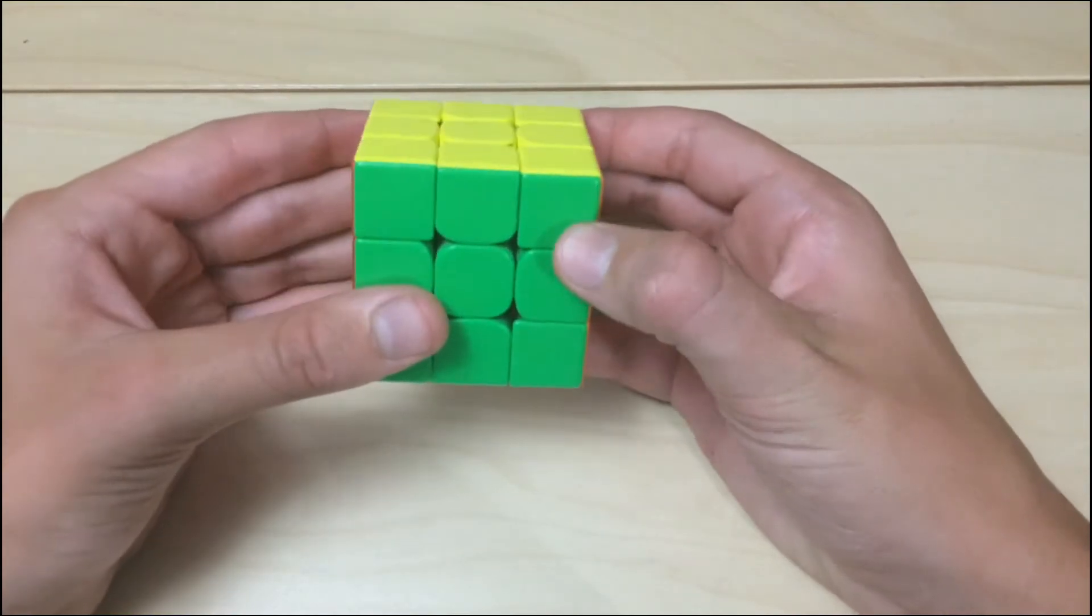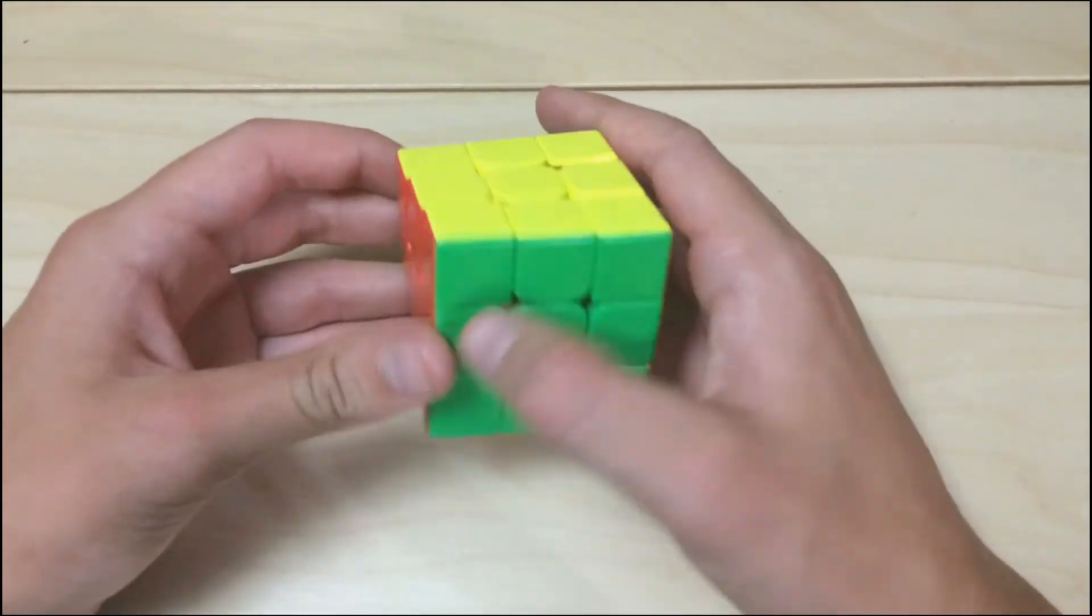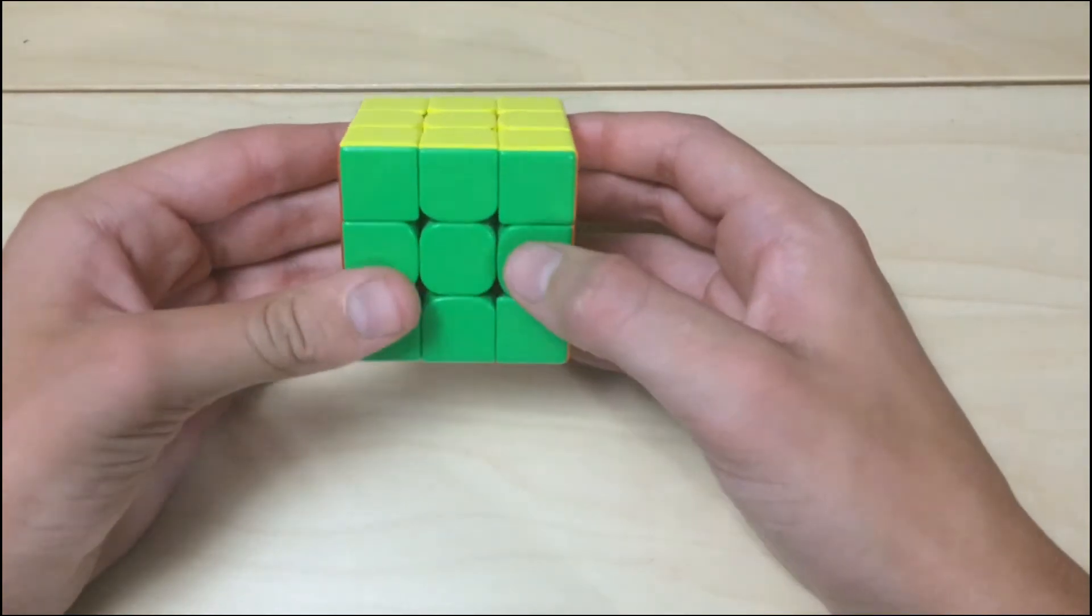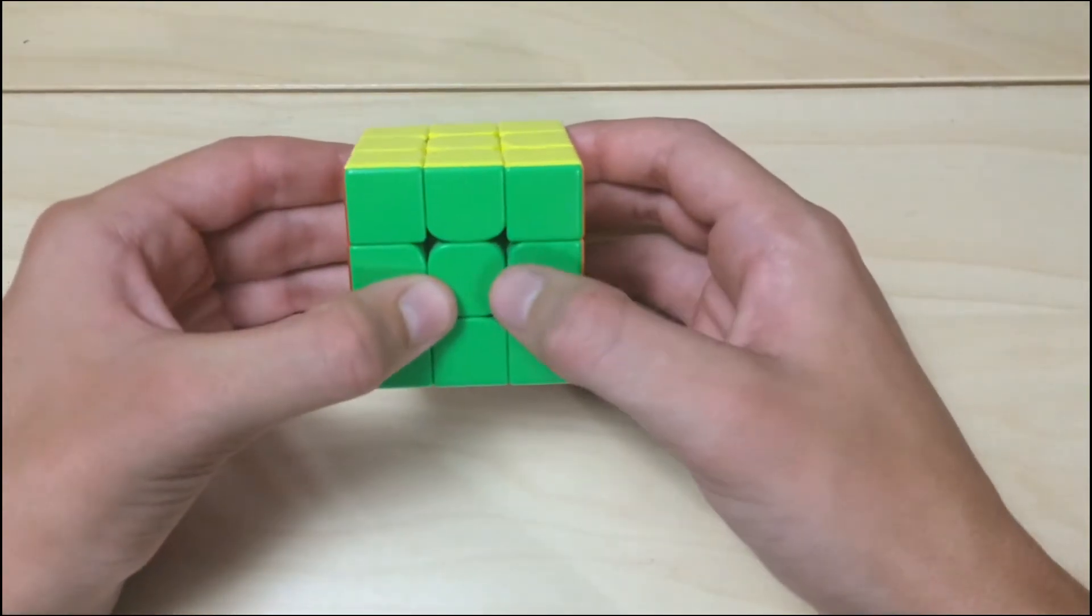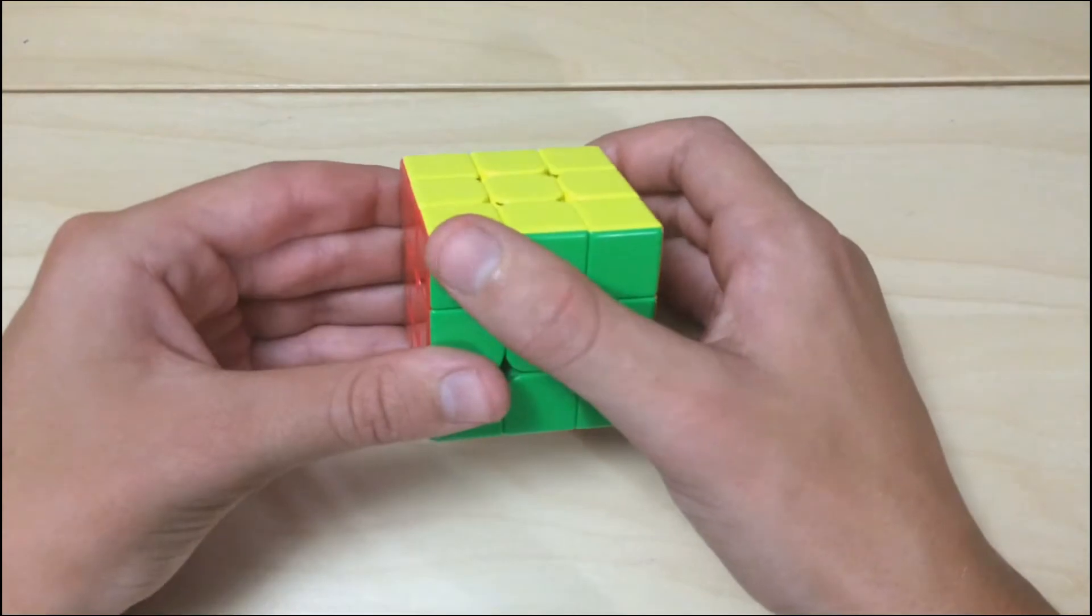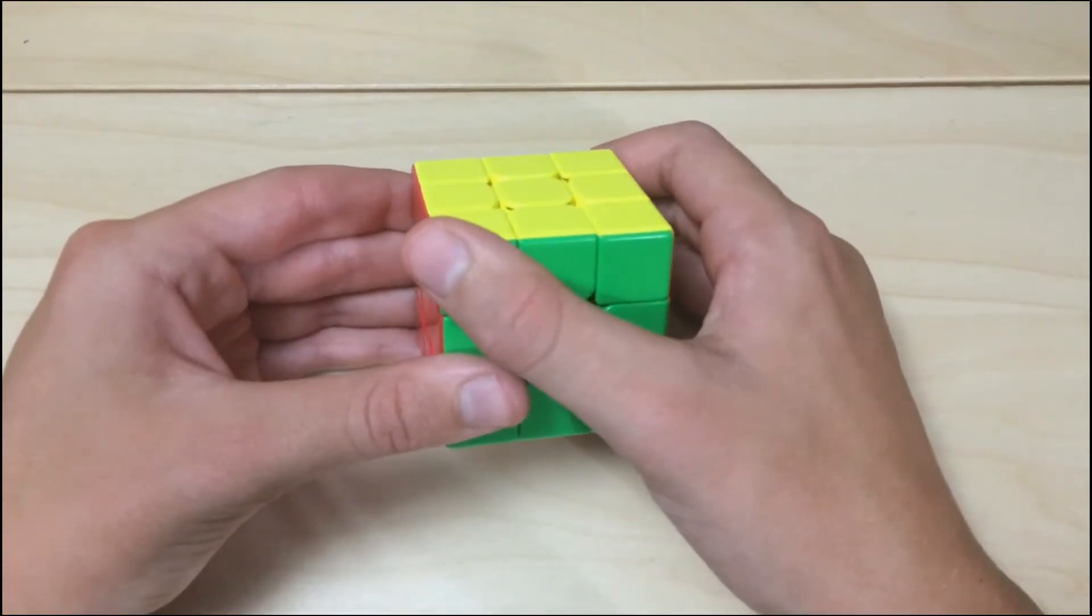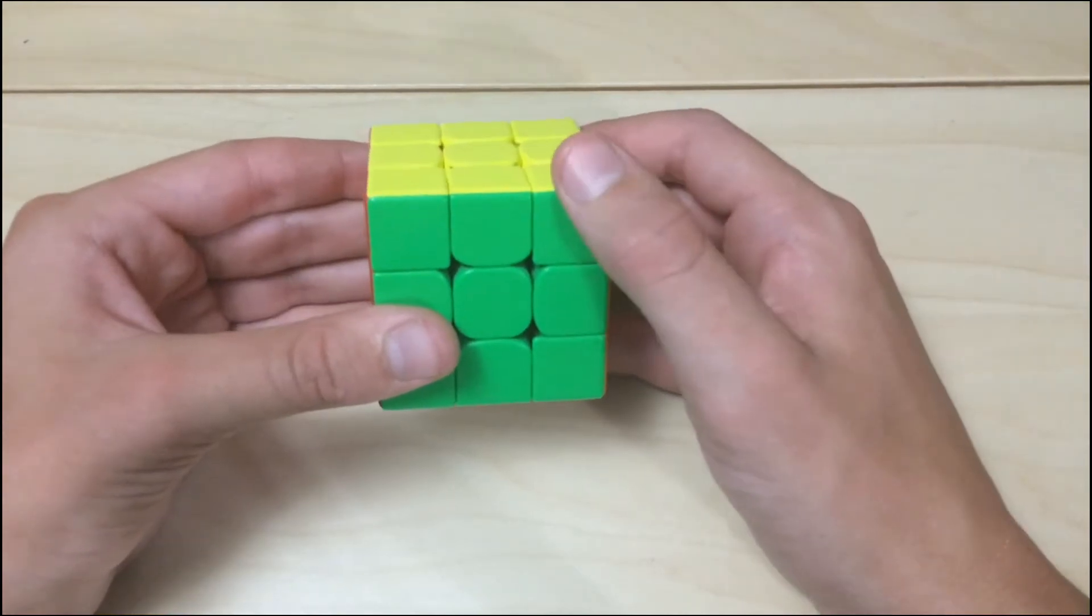You can get even more specific and say which sticker of that face by putting a dash in there. So T dash, or TF dash one would mean I have my thumb up here, because this is number one, but I would more likely have it up here as number two.